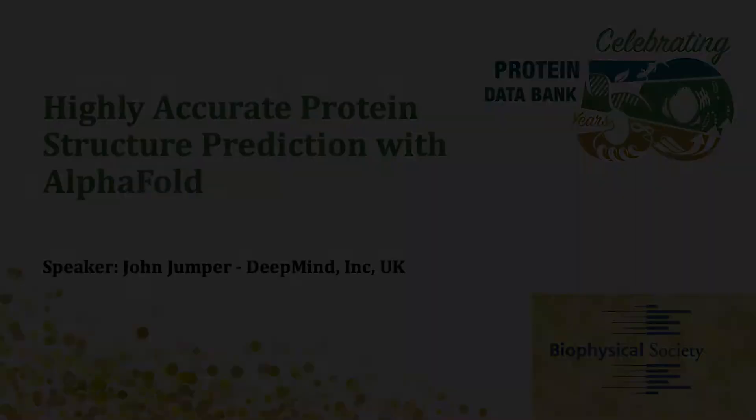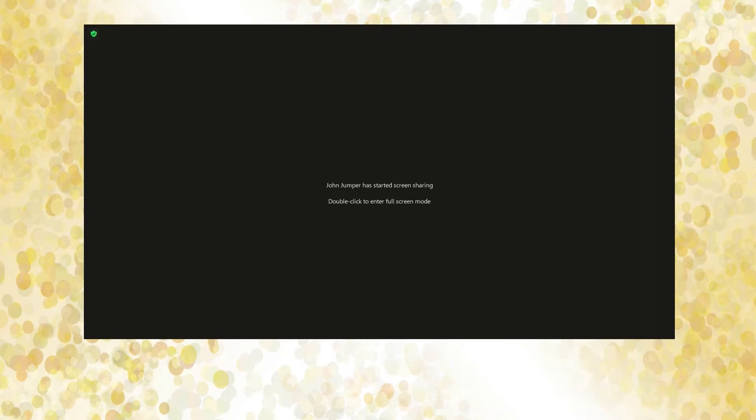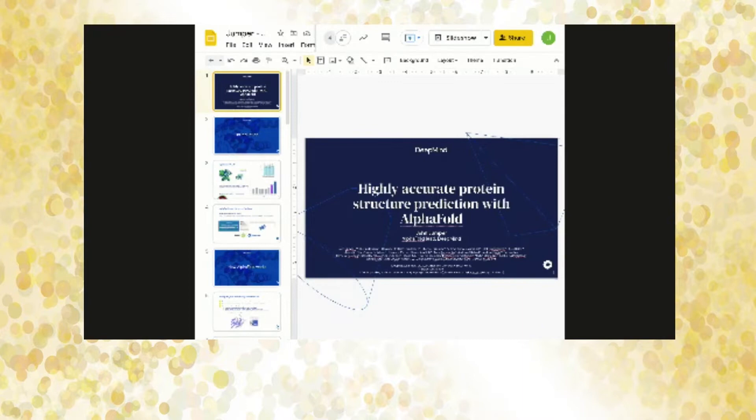John Jumper is a scientist at DeepMind Incorporated, which is a spin-out from Google, and he will talk about highly accurate protein structure prediction with AlphaFold. One small thing: I am a trained biophysicist, by the way. I did my PhD with Tobin Sosnick and Carl Fried. I've actually not taken a computer science course.